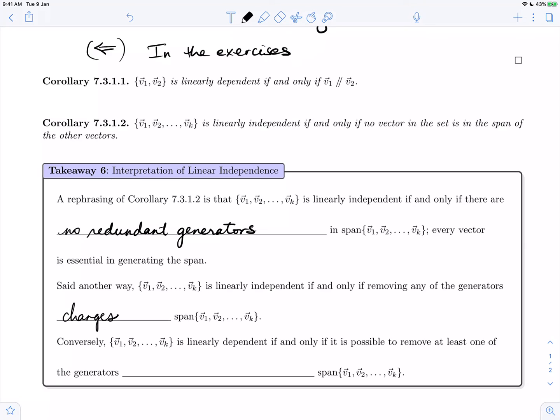And conversely, v1 through vk is linearly dependent if and only if it is possible to remove at least one of the generators without changing the span.